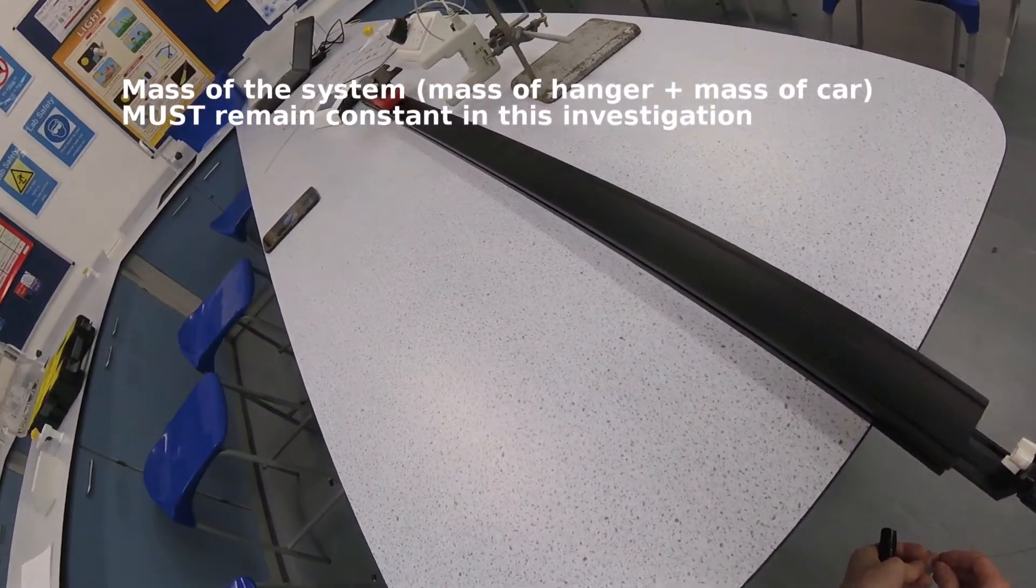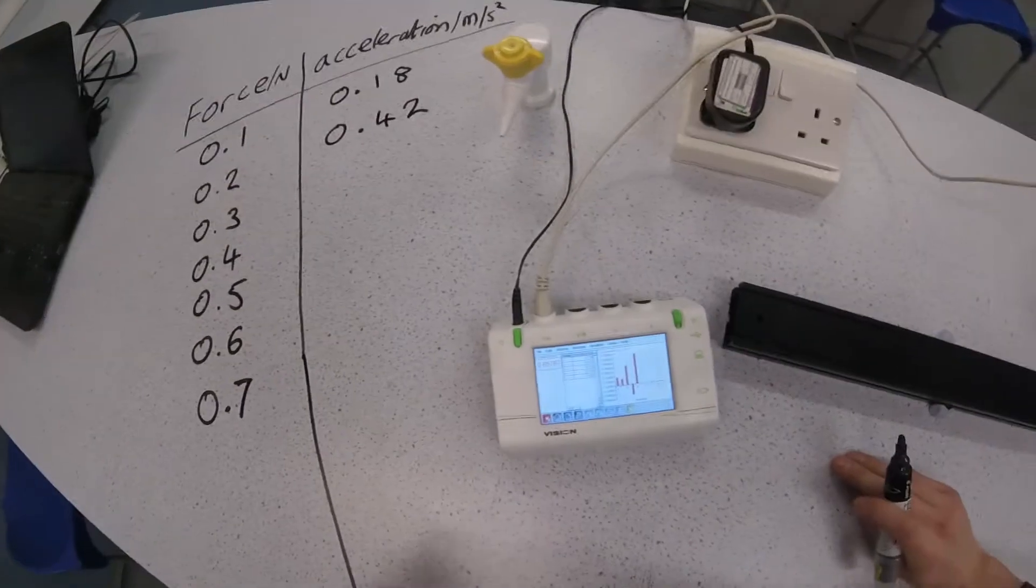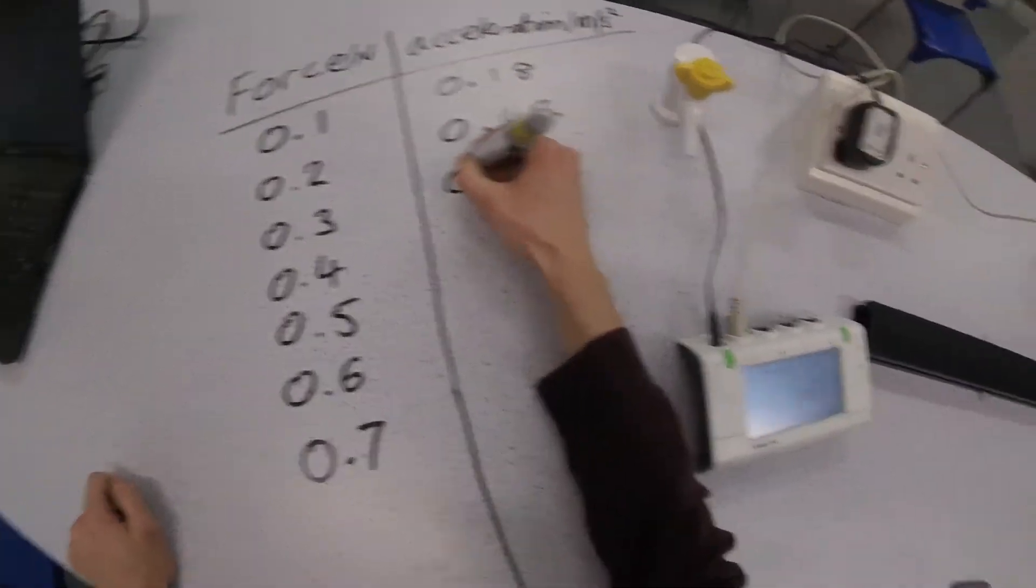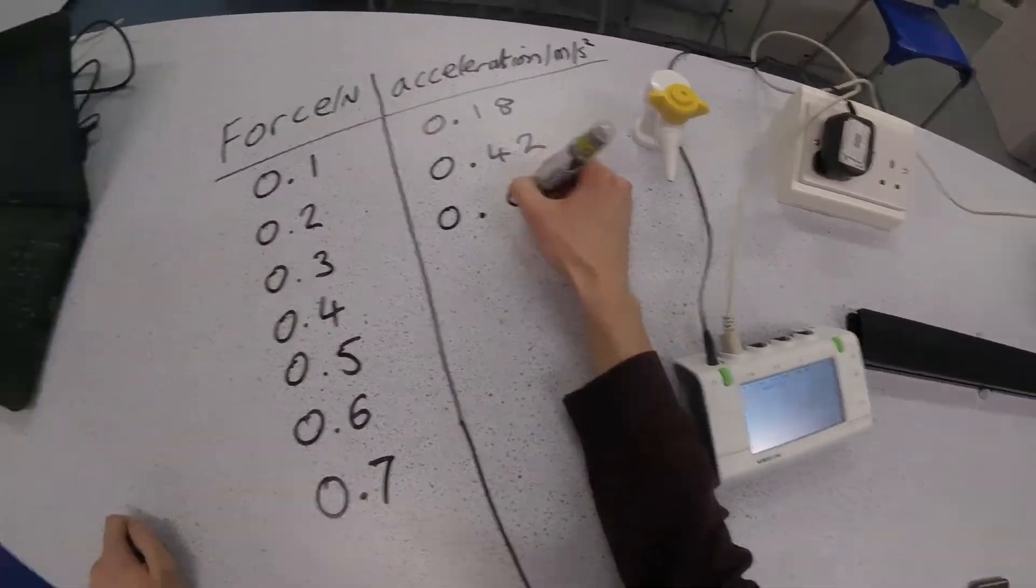I've taken my second reading. I'm going to go ahead and speed up the rest of the investigation. I think it's pretty straightforward from here. All I'm doing is taking masses from the top of the car and adding them to the hanger.